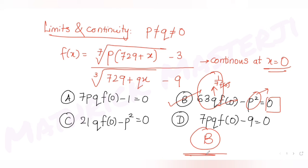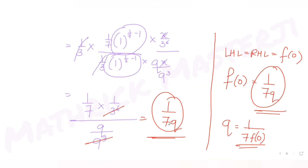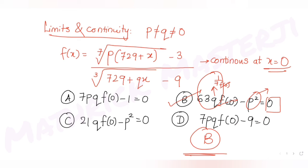I hope you understood how to solve this question. We first used the indeterminate form to find p = 3, then adjusted the limit into the form x^n − a^n divided by x − a, applied the formula n·a^(n−1), and got f(0) = 1/(7q). Substituting into option B confirmed it as the correct answer. I'll see you tomorrow with another question. Please like, subscribe, and share with friends preparing for JEE.